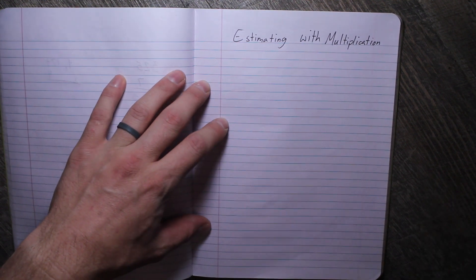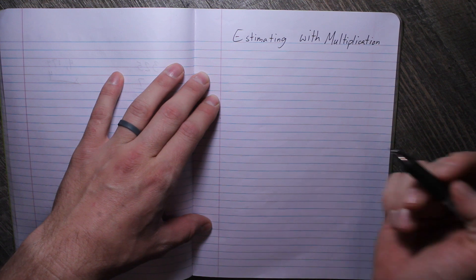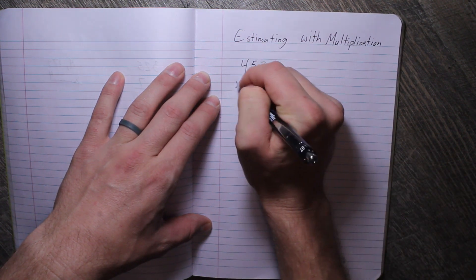So what does this look like when we're estimating with multiplication? So we're just going to do some regular rounding and multiply. So let's say we have 457 times 6.